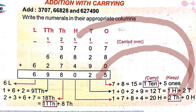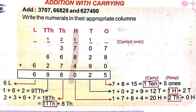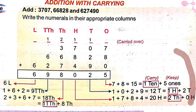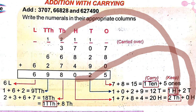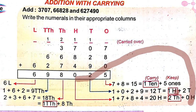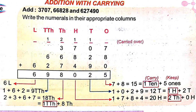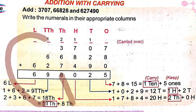Continuing the addition with carrying: hundreds place has 7, 8, 4, plus 1 carried, totalling 20 — keep 0 in hundreds place and carry 2 to the thousands place. Thousands place: 3, 6, 7 plus 2 carried equals 18 — keep 8 in thousands place and carry 1 to the ten-thousands place. Ten-thousands place: 6 plus 2 plus 1 carried equals 9. Lakhs place: 6. So the answer is 698,025.